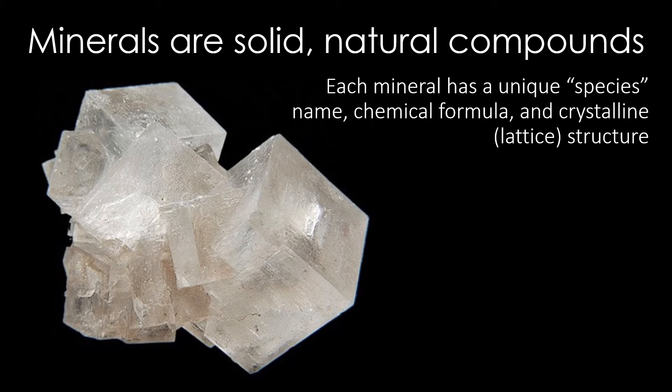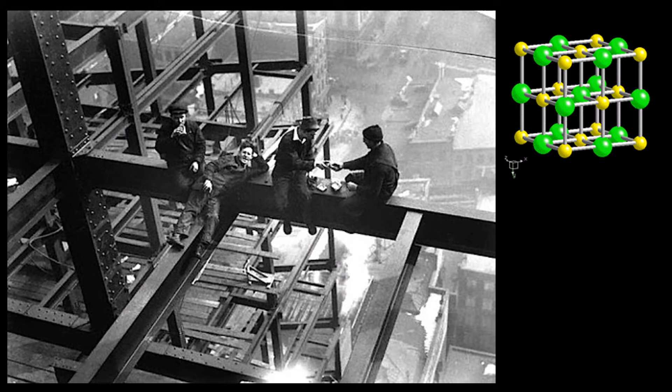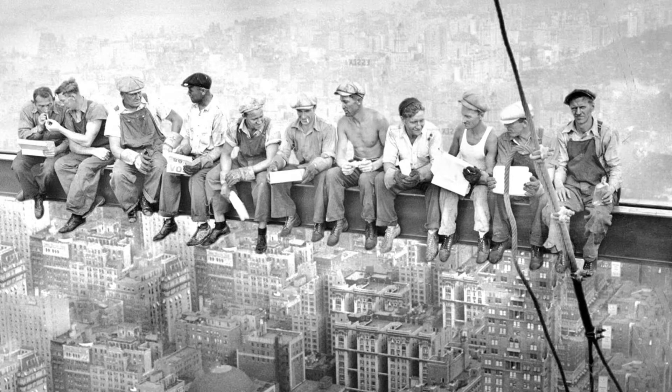But what is the crystal lattice structure, exactly? Think of this lattice like the steel beams in a skyscraper, except the steel beams are actually bonds, and wherever two beams would intersect, there should be an atom. You can keep building a skyscraper upward and outward by adding more steel beams and more intersections — theoretically forever. The same is true of minerals, which grow through the addition of more atoms and more bonds.